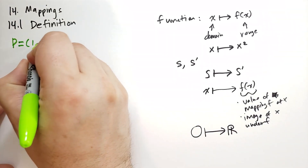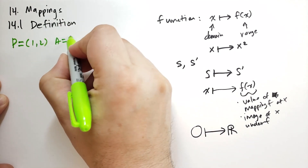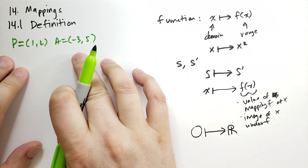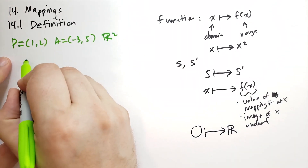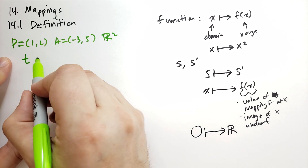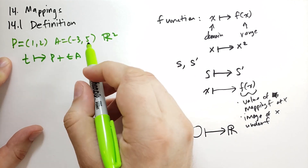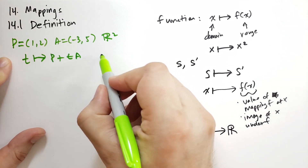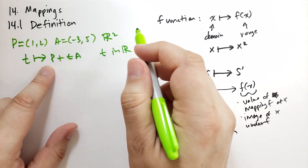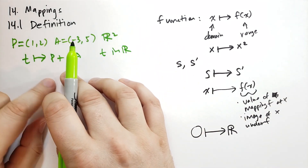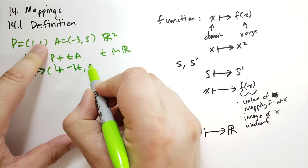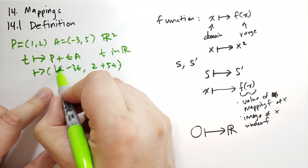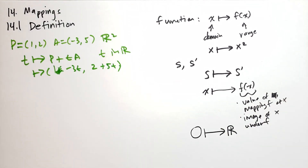Let P equal the point (1, 2) and A equal the point (−3, 5). So P and A are both in the R² set — they're points in the plane. Then there's an association where you take T and map it to P plus TA, where T is a real number. This is the parameterized form of a line. We can rewrite this as the point (1 − 3T, 2 + 5T).